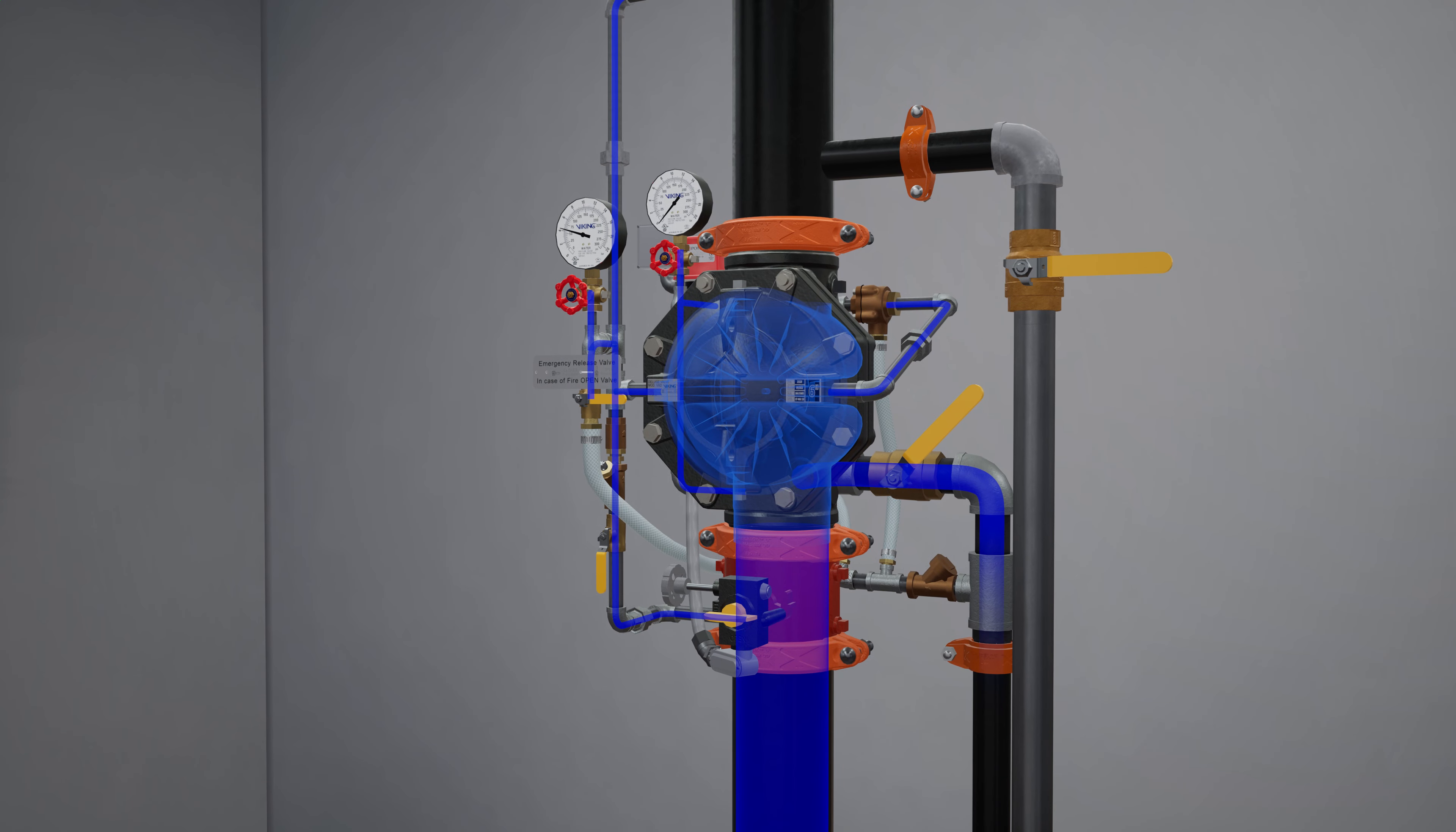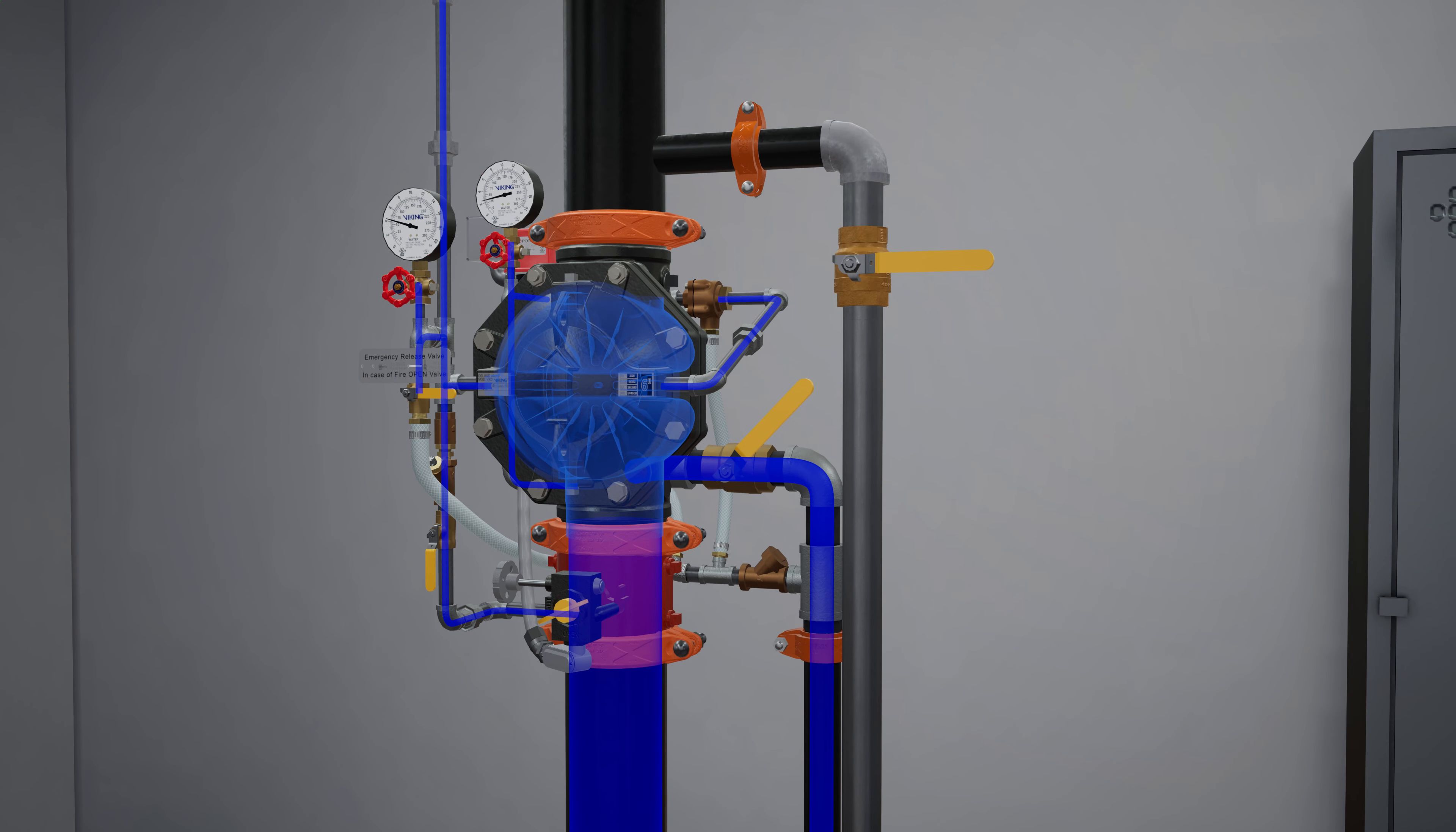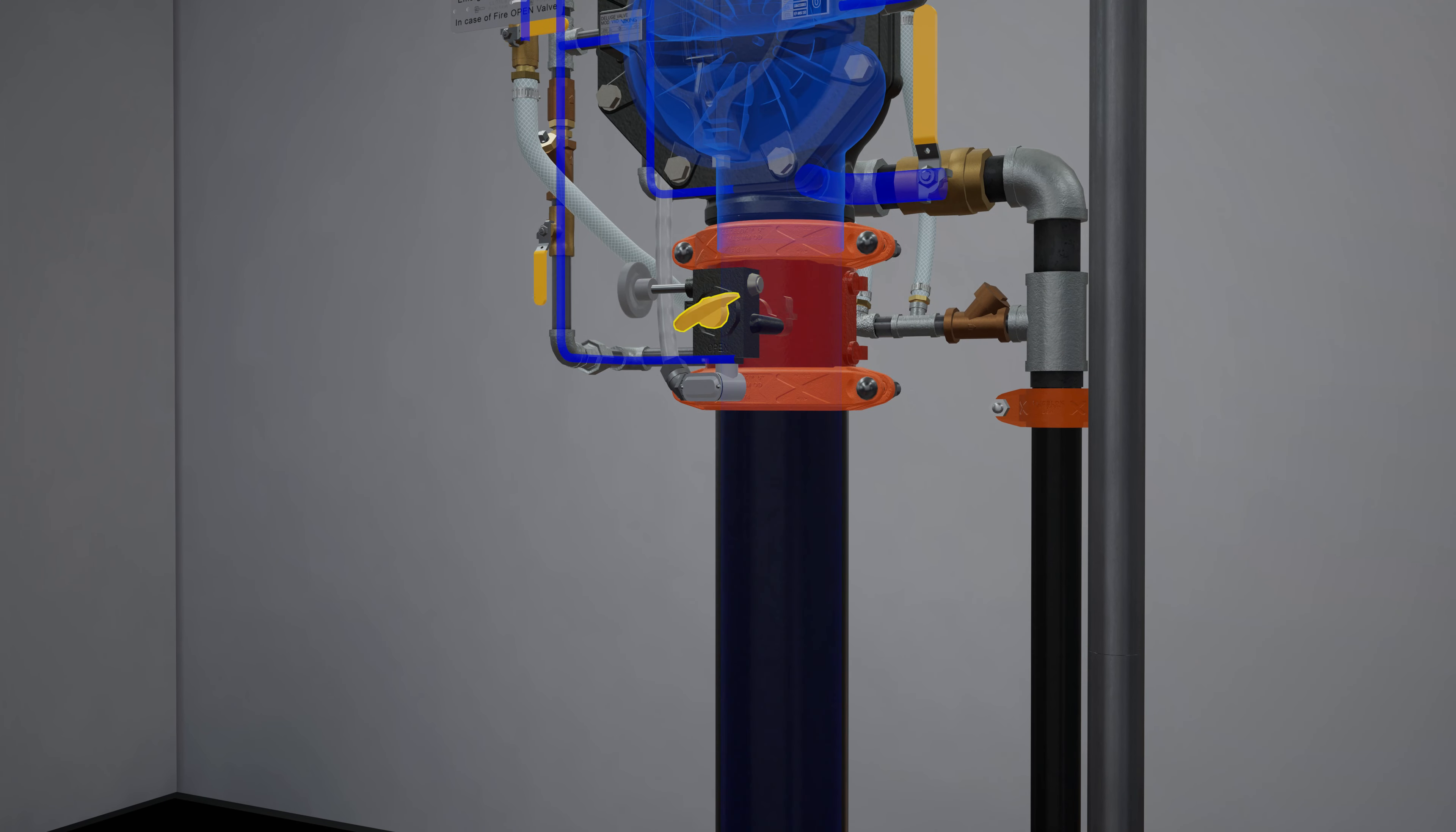Then slightly open the water supply control valve. Once water flow has been established, close the flow test valve. Opening the flow test valve purges any air from the inlet chamber of the BXV valve. Now fully open the water supply control valve.